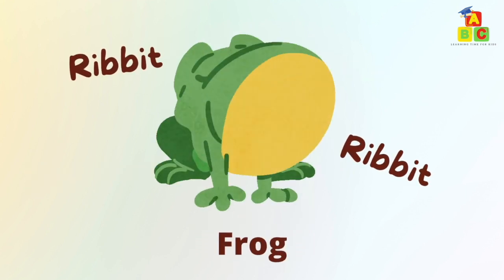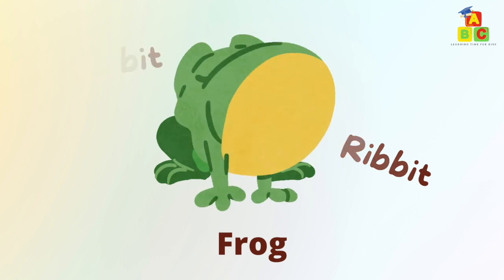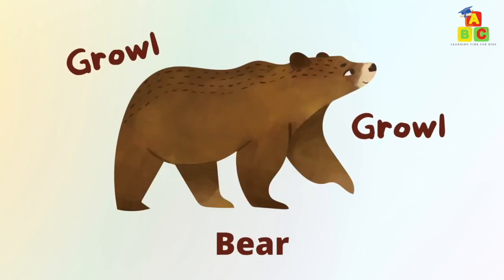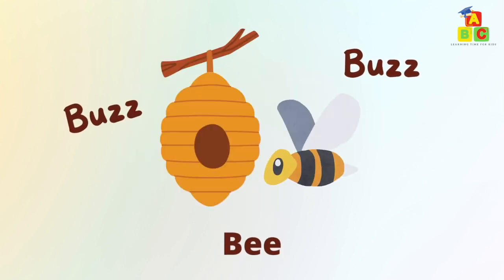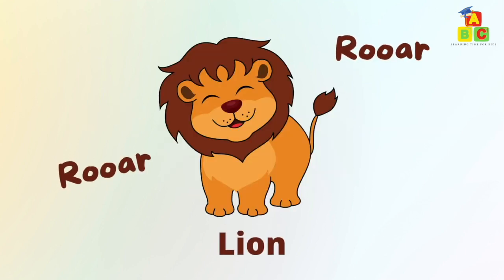The frog says ribbit. The bear says growl. The bee says buzz. The lion says roar.